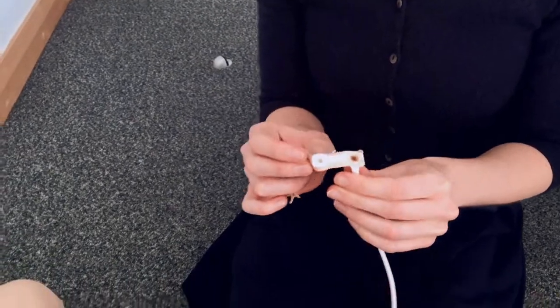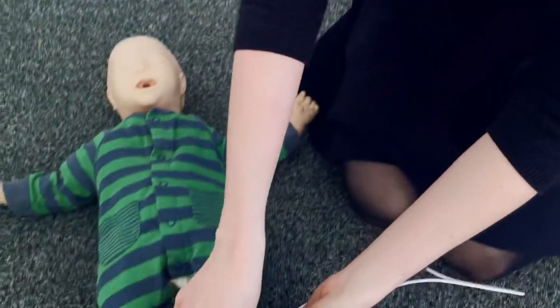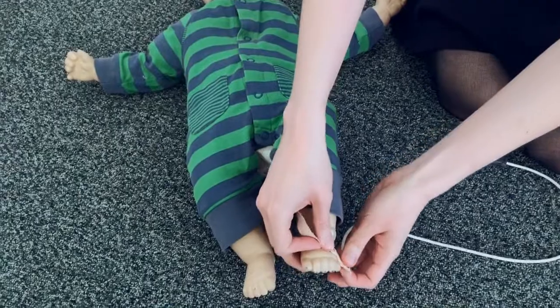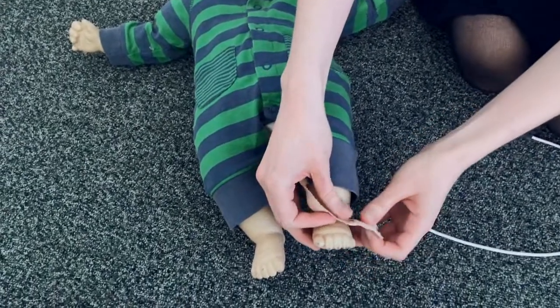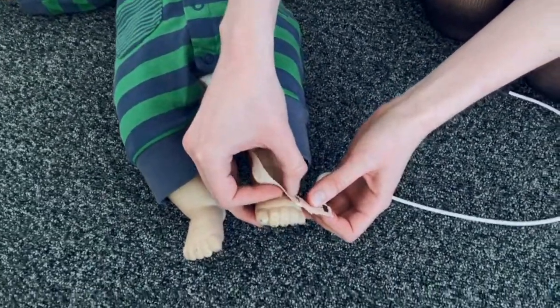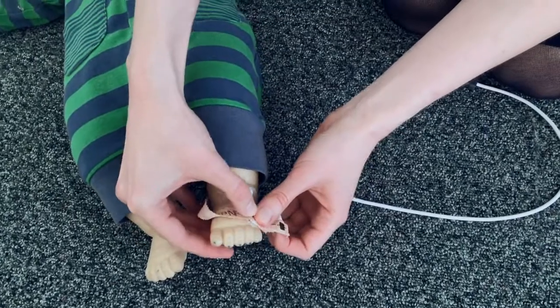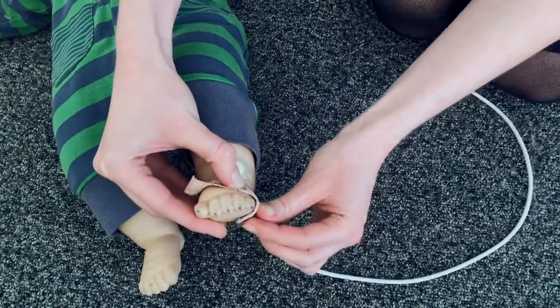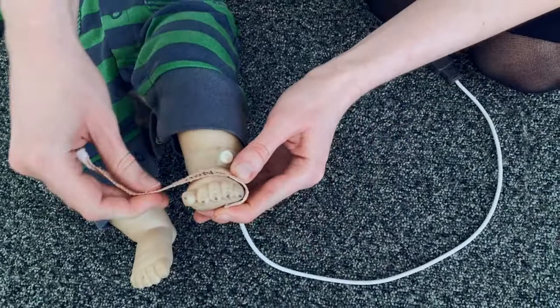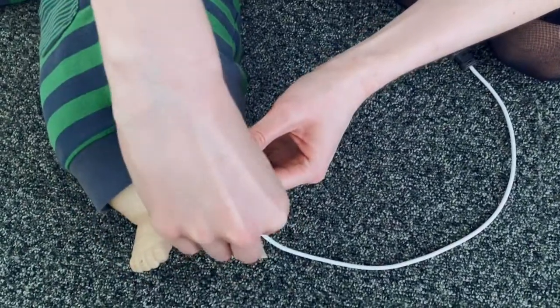Place the probe onto your baby's foot, making sure the foot is clean and socks are off. Place the top part of the sensor on one side of the foot, bring the other half around to the bottom, and secure it with the tape.